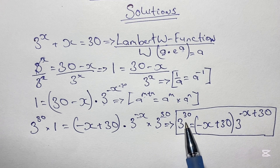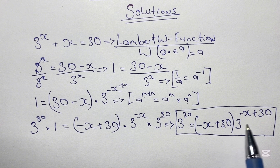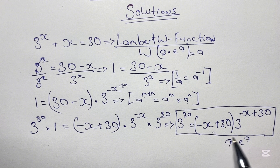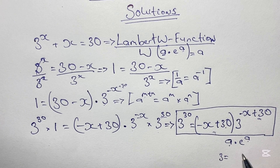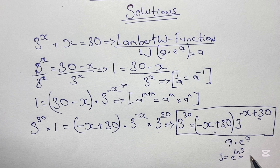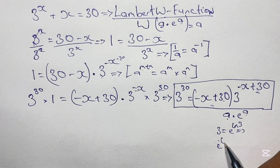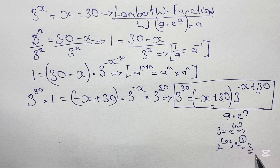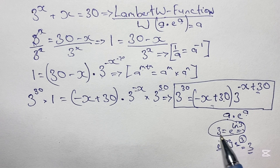So from here we have 3 to the power of 30 equals (negative x plus 30) times 3 to the power of (negative x plus 30). To use the Lambert W function we need the form a times e to the power of a, and we can see a appears in both places — but we still don't have e. We can write 3 in terms of e: this is done by expressing 3 as e to the power of ln 3. Since ln means natural log with base e, e to the power of ln 3 evaluates back to 3 — so we are simply writing 3 in terms of e.